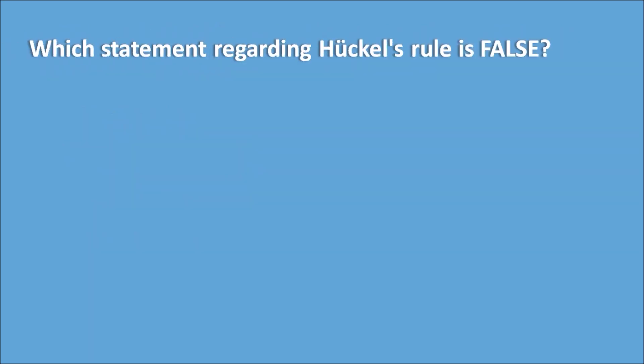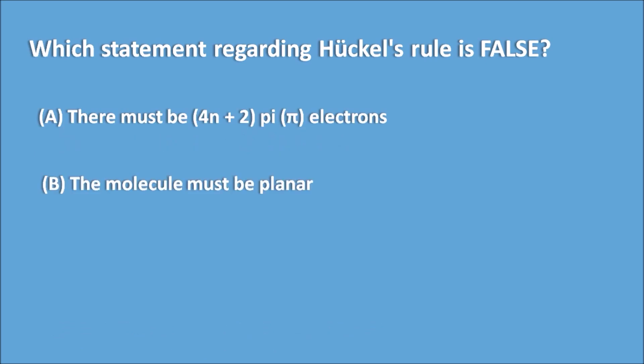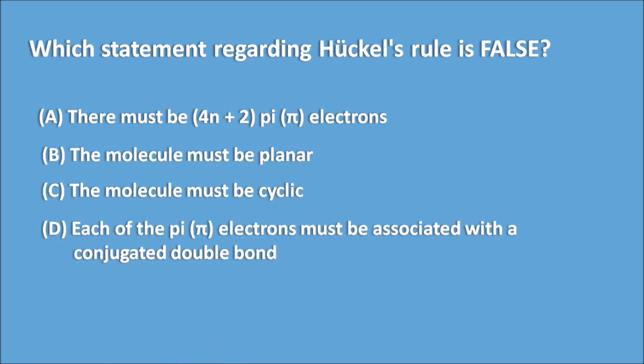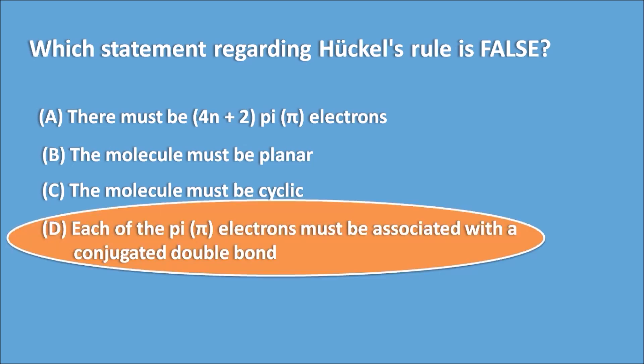Which statement regarding Hückel's rule is false? A: there must be 4n+2 pi electrons, B: the molecule must be planar, C: the molecule must be cyclic, D: each of the pi electrons must be associated with a conjugated double bond. D is the false statement and the answer, because each pi electron must be associated with a conjugated single bond, not a double bond.